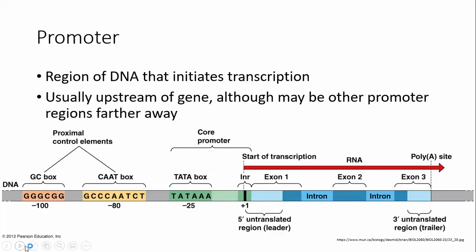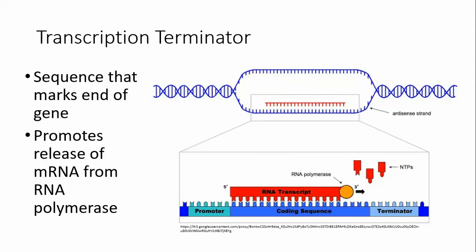So what is the promoter? It's where transcription is started — where it's initiated — and it's just upstream of the gene. There are some elements that are common to the promoter, one of which is the TATA box. It's got T-A-T-A in the sequence, and that's very commonly found in a lot of promoters. And then you have to have something that signals when to stop transcribing, and that is usually a terminator sequence that's going to reduce the affinity of RNA polymerase. RNA polymerase will detach from the DNA and release the RNA transcript.